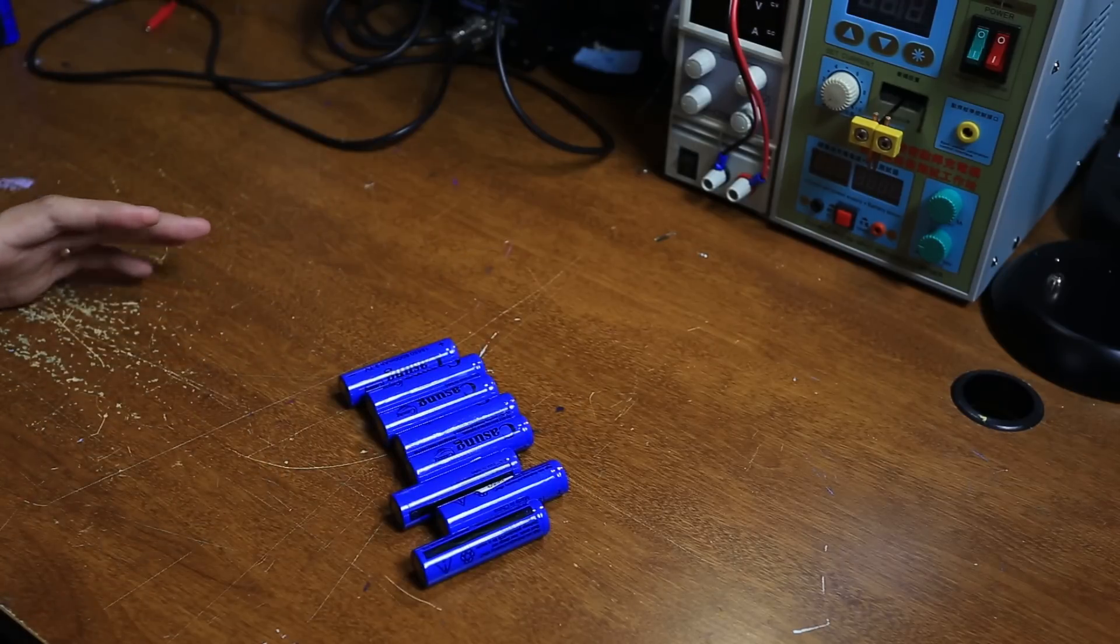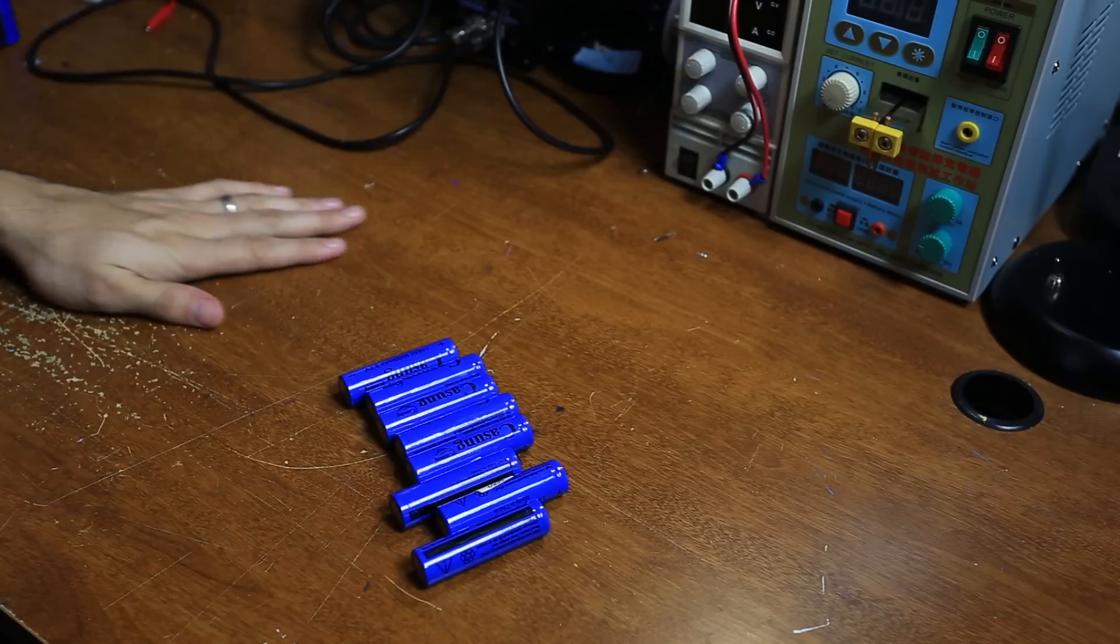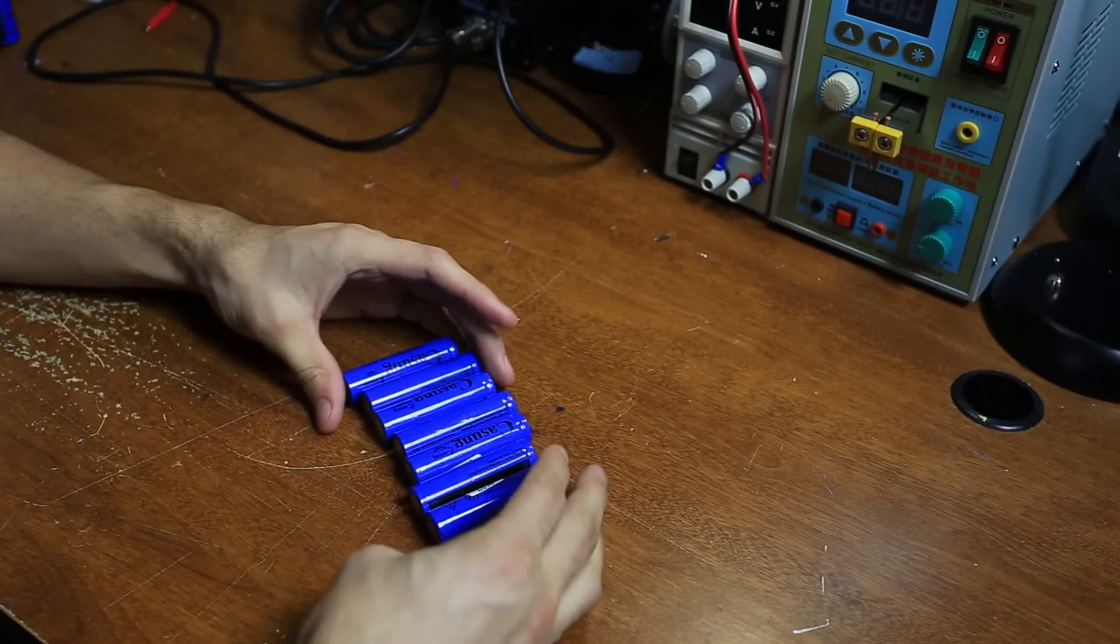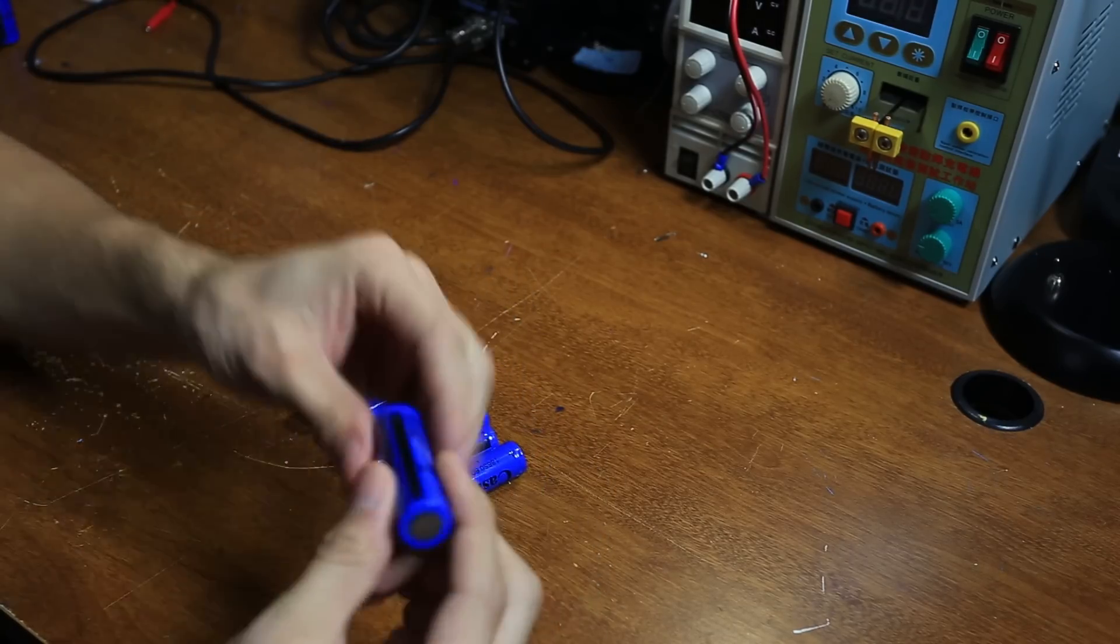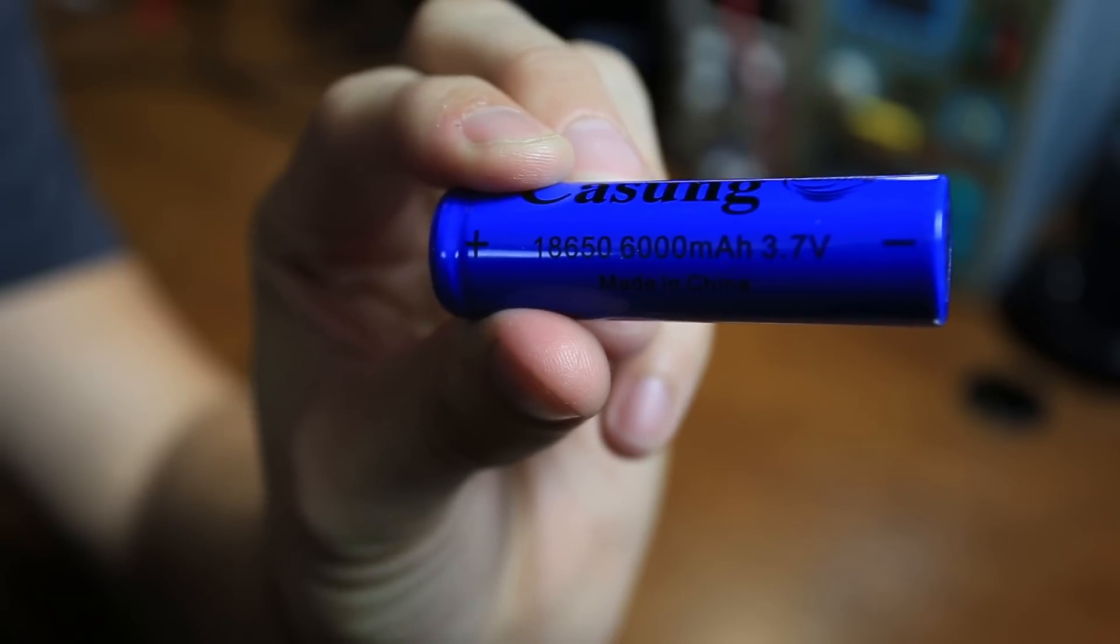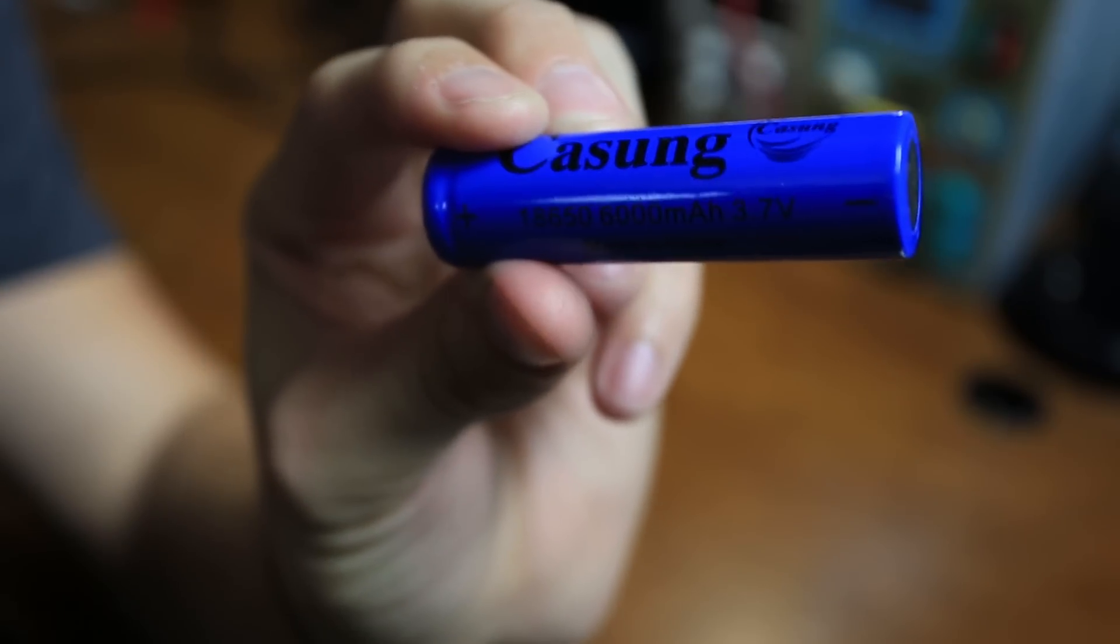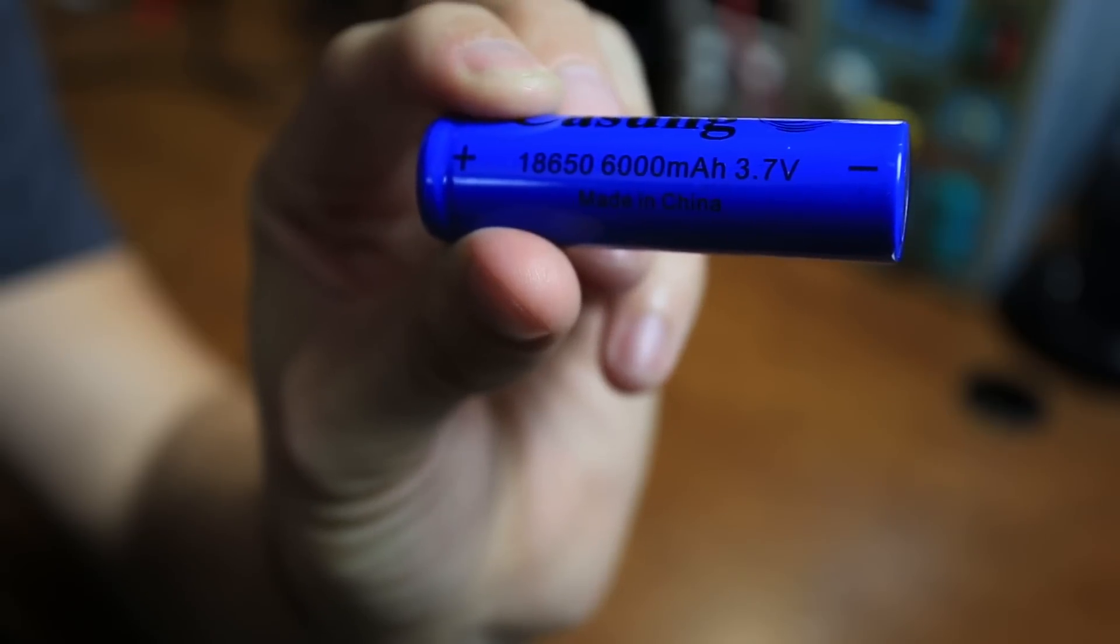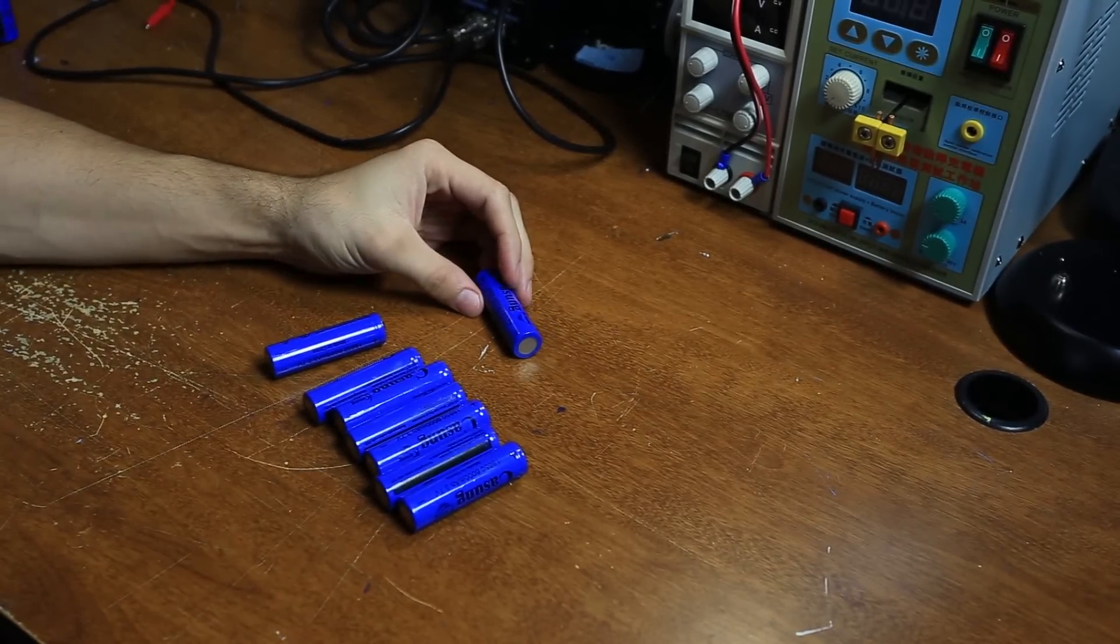First off, these batteries are rated - you can see on the battery it says that it's rated for 6000 mAh at 3.7 volts. That's not possible. I mean, just with this battery chemistry, the most you could possibly have is like 3300, and I think those are like the Panasonic batteries.